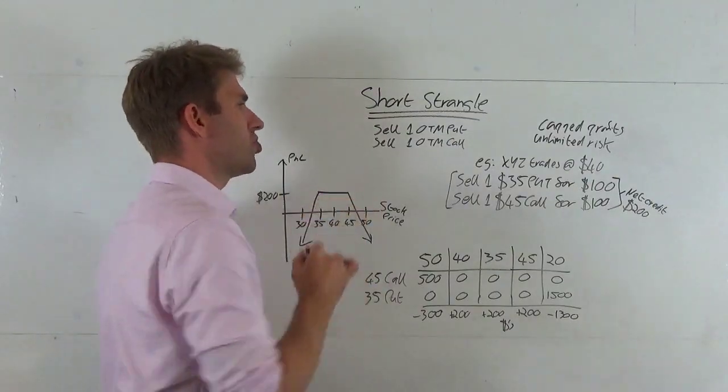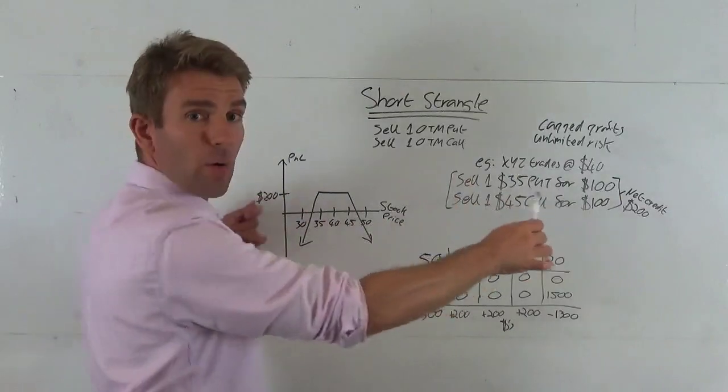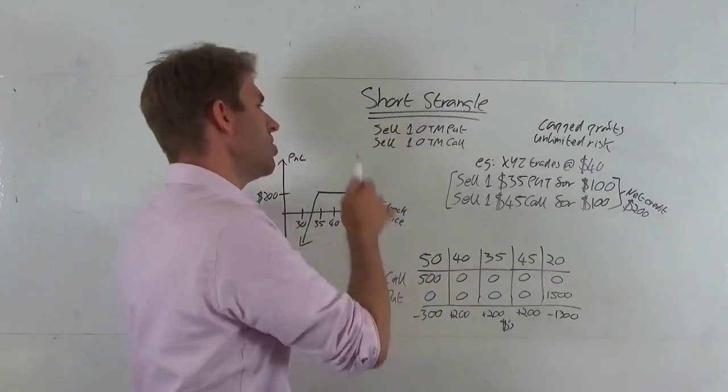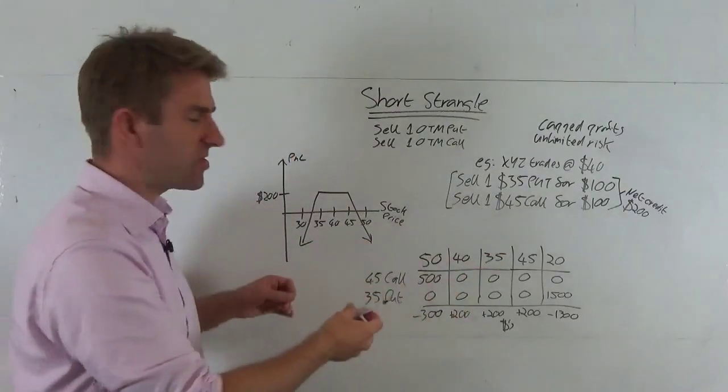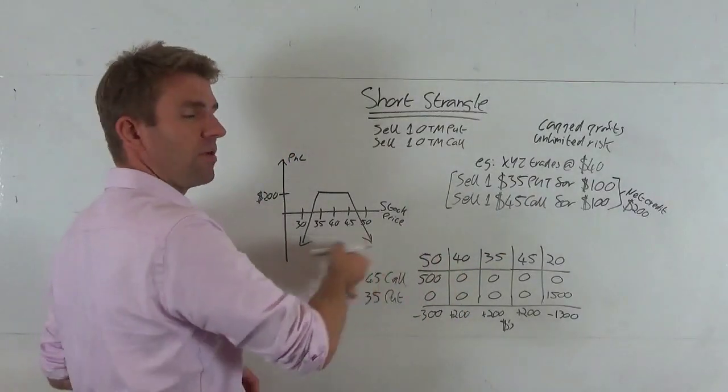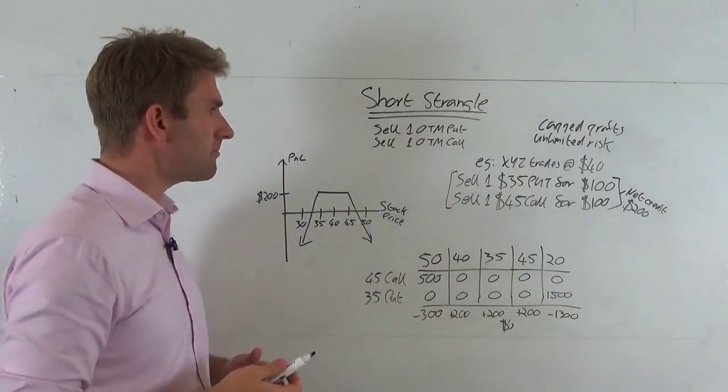One thing to point out with strangle is that yes you do have good chance of profit and high probability of success, especially if you go wide out on the strangle. However, you have unlimited risk because you're not buying a put or call option on the other side to create that locked-off chart you'd have with an iron condor.